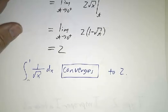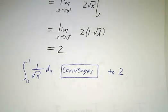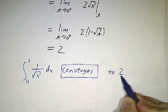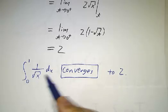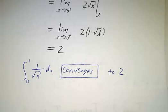And just as with the other kind of improper integral, if the limit exists, we say it converges. And whatever the limit is, we say that's what it converges to. So the integral from 0 to 1 of 1 over root x dx converges to 2.